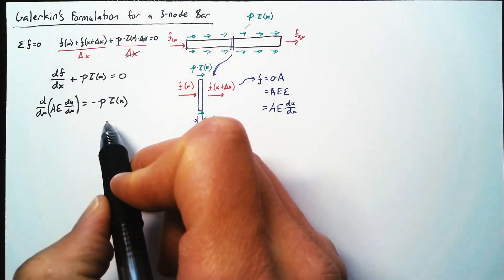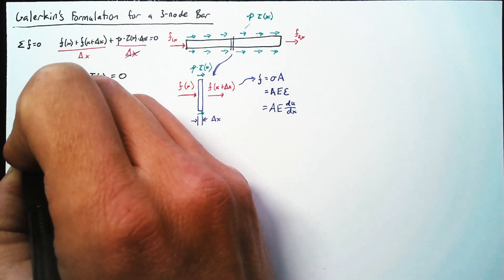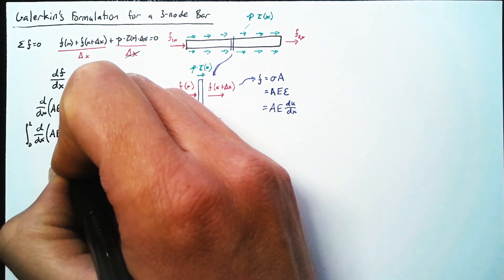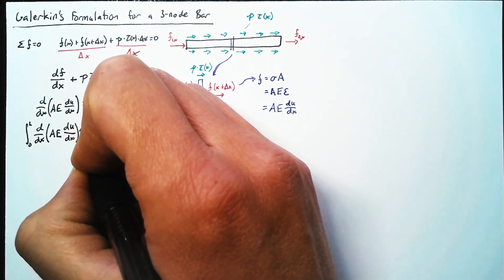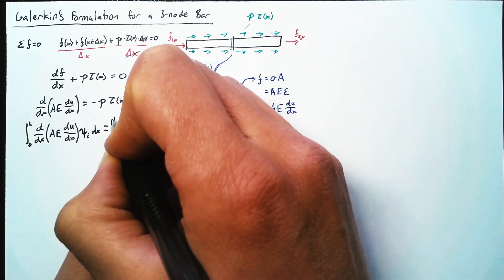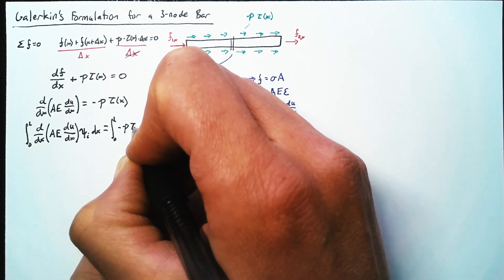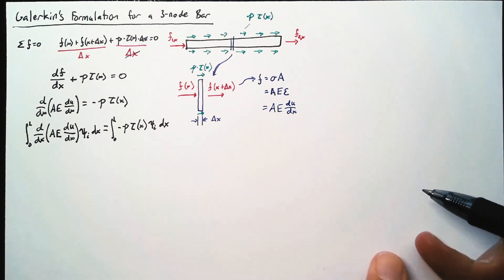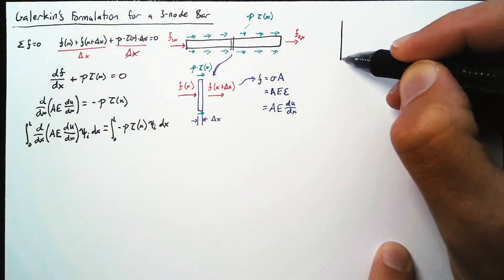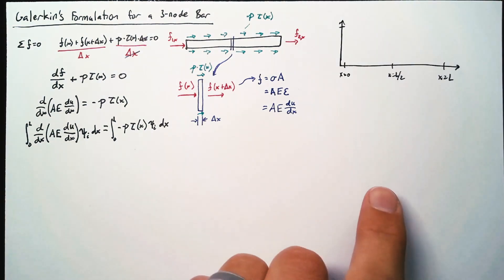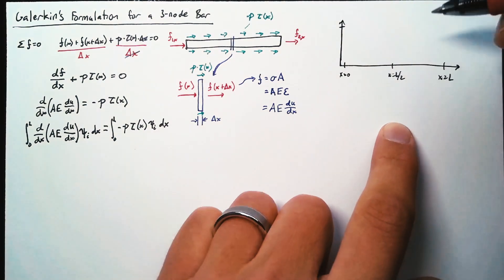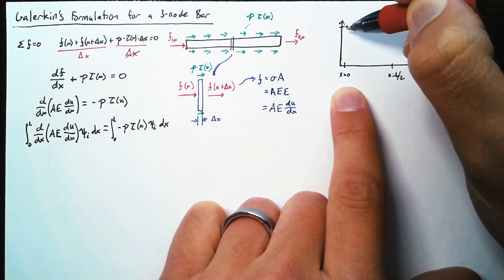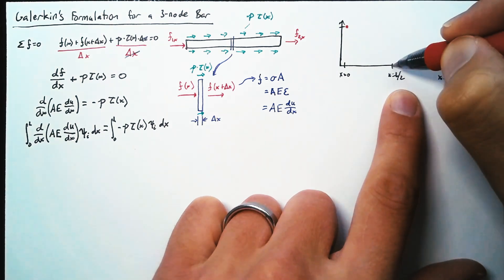Galerkin's formulation says that we can take this differential equation, integrate it over the length of the bar, and multiply it by a weighting function — and if we do all this, the equation will still hold true. The weighting functions that we're choosing here are our ψᵢ's, our shape functions. Remember that each shape function is 1 for the node it applies to and 0 for the other two nodes.